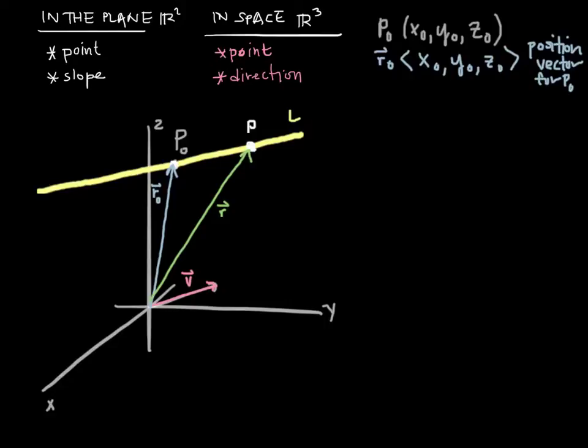p is any point on the line. That's a general point, so its components are just x, y, z. Likewise, its position vector is going to have the same components as its point components, so those components will just be x, y, and z. And those are the components of r, the position vector for p.